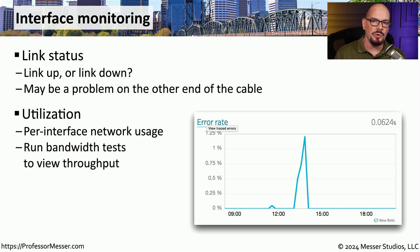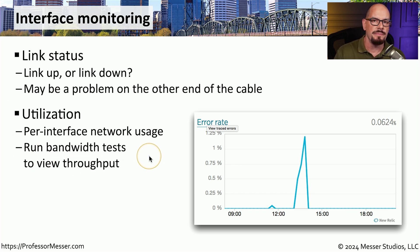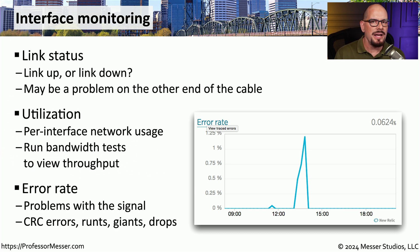Utilization is also a great metric to monitor, especially if you're concerned about total throughput through the network. You want to be sure that you have enough bandwidth for all of the services running over that network connection. And if you're not quite sure of the total amount of throughput you can get over a link, you may want to run some bandwidth tests. If you want notification that problems might be brewing with that particular connection, then you'll want to look at all of the errors on that interface.